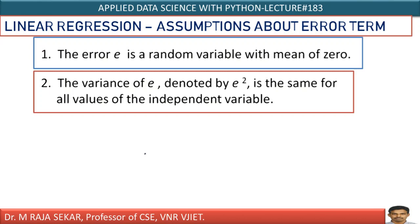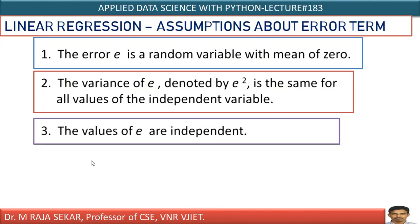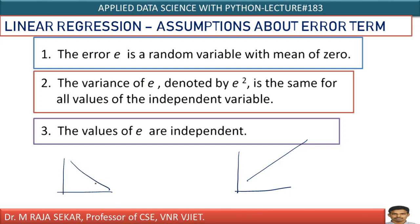The values of E are independent — error values must be independent. There should not be any pattern in the error term. Sometimes, if you plot the error term, there may be an increasing trend or a decreasing trend. This type of pattern is not allowed. The error term has to be distributed randomly.